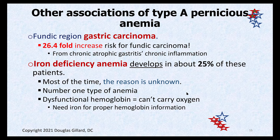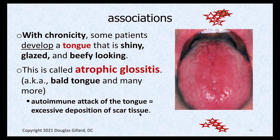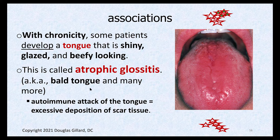Without hemoglobin you can't carry oxygen, giving classic anemia symptoms: fatigue, feeling run down, easy bruising. Another association is atrophic glossitis: the autoimmune attack against parietal cells can also target cells in the tongue that resemble parietal cells. Repeated bouts of inflammation and healing cause collagen deposition, making the tongue smooth and shiny from scar tissue — sometimes called the 'bald tongue.'